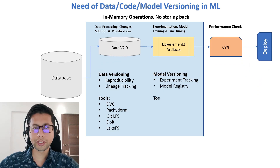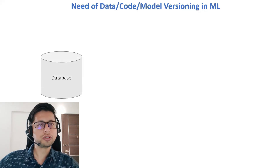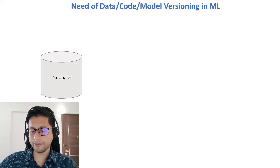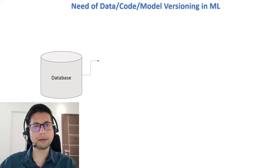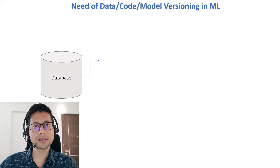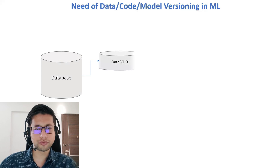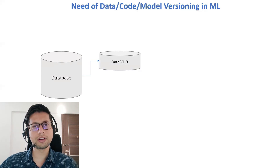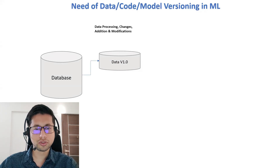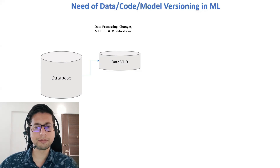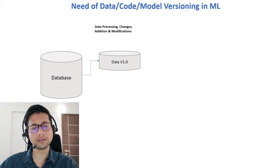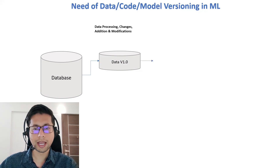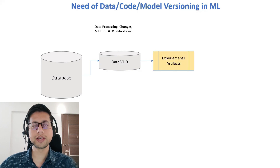Any model building starts with the database. We go through different lifecycle steps of machine learning. We have data, and from that we extract some sample data for training the model. We have data named version 1.0, achieved with the help of some data processing — changes, additions, and modifications. On top of that we do some experimentation, where we create a model.